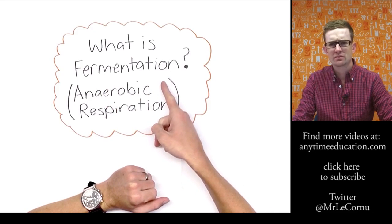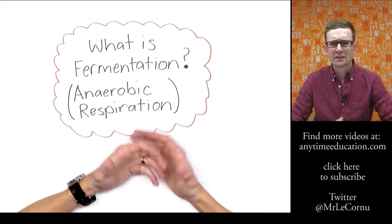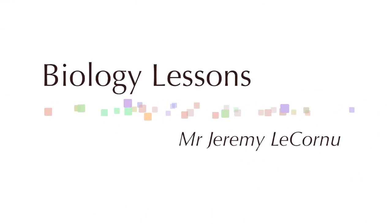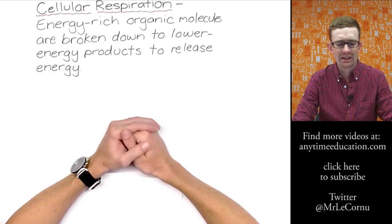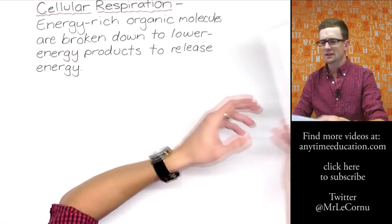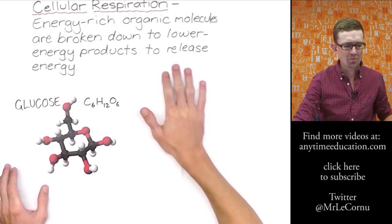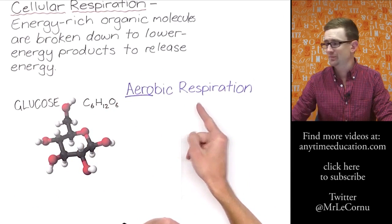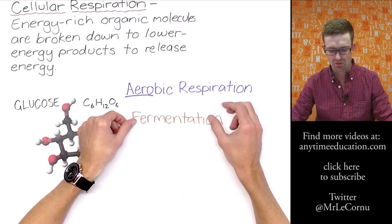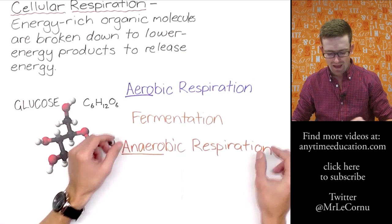So what is this thing called fermentation? You might have heard it referred to as anaerobic respiration. What is it, how does it relate to living things, and what do we need to know about it in biology? Fermentation is a type of cellular respiration - where energy-rich organic molecules, usually glucose, are broken down to lower energy products to release energy. The other type of cellular respiration is aerobic respiration. Another name you might hear fermentation referred to as is anaerobic respiration.